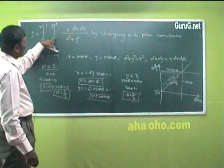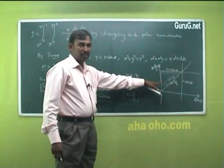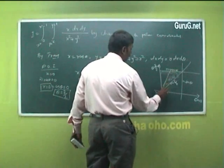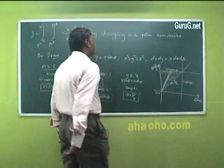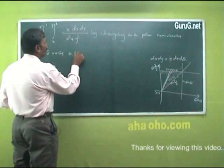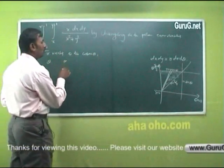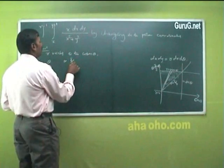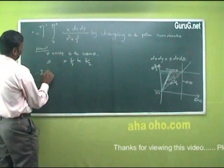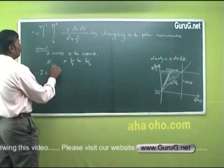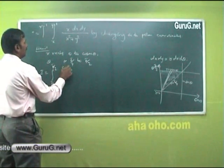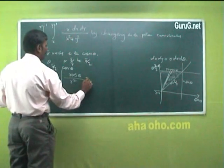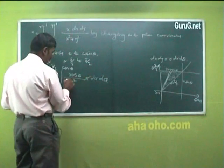The region is bounded by x equals 0, x equals 1, y equals x, and y equals 1. We draw a radial strip — r varies from 0 to cosec theta, and theta varies from π/4 to π/2. So I equals the integral from π/4 to π/2, then 0 to cosec theta, of r cos theta divided by r² times r dr dθ. The r² cancels, leaving cos theta dr dθ.